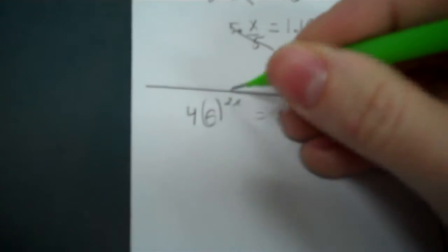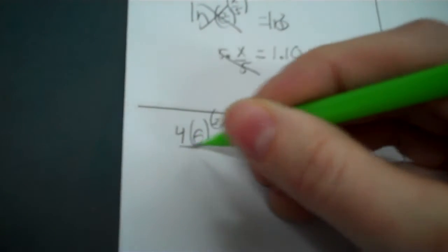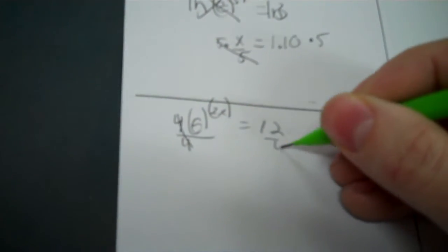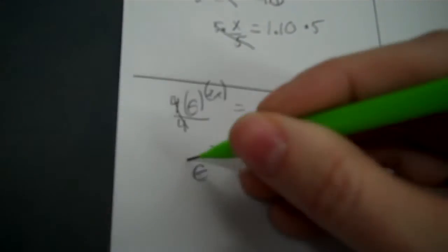Okay, next problem parenthesize the E and its exponent. It's always going to have an exponent. Okay, because so first off I get rid of this 4. Now 4 is in the front so I divide by 4. So that's going to be 3. E to the 2X.